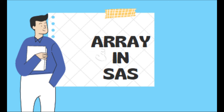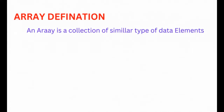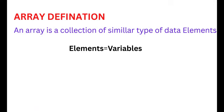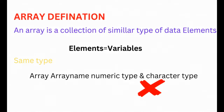Hi guys, in this session we are going to learn about arrays in SAS. Firstly, what is an array? An array is a collection of similar types of data elements. Here, elements are nothing but variables. Similar type means either character or numeric. It means we can't use character and numeric in one array at a time.